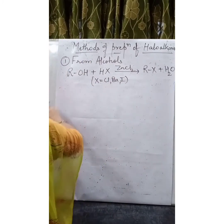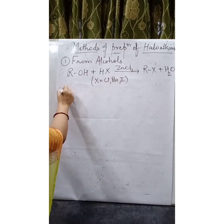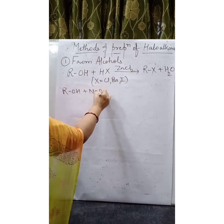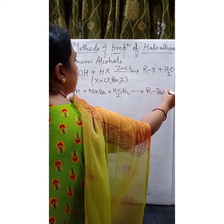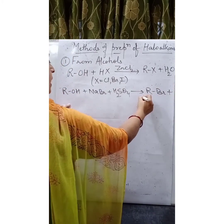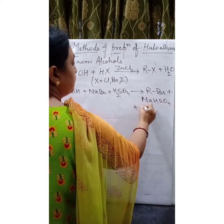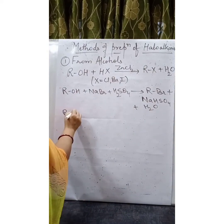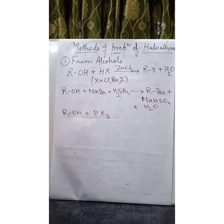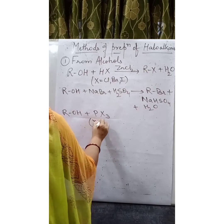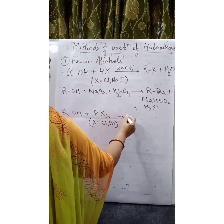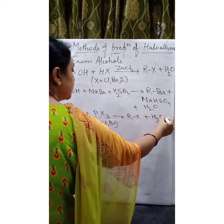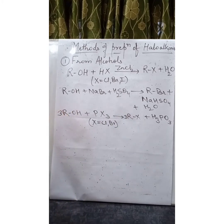The next method is specifically applicable for the formation of bromocompounds: ROH plus NaBr in presence of H2SO4 gives RBr plus NaHSO4 plus H2O. Another method uses ROH plus PX3 — phosphorus trihalide, where X is either chlorine or bromine — giving RX plus H3PO3. By this method, we can prepare only chloro- and bromocompounds, not iodocompounds.